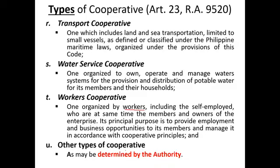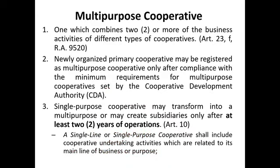And of course, there are other types of cooperative as may be determined by the CDA or the Cooperative Development Authority. Again, familiarize yourselves with the types of cooperative. On multi-purpose cooperatives: if you combine two or more types, there are two ways to organize one. Either you organize it directly as a multi-purpose cooperative, in which case you must comply with all requirements under the implementing rules, specifically the capital requirement of at least 100,000 or the amount required by the feasibility study, whichever is higher.